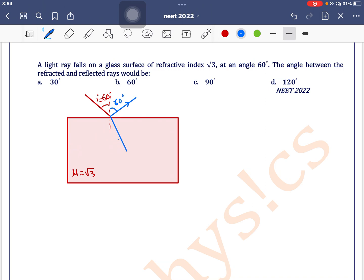We can find the angle of refraction using Snell's law: μ₁ sin i = μ₂ sin r. By default, we'll consider medium one as air.